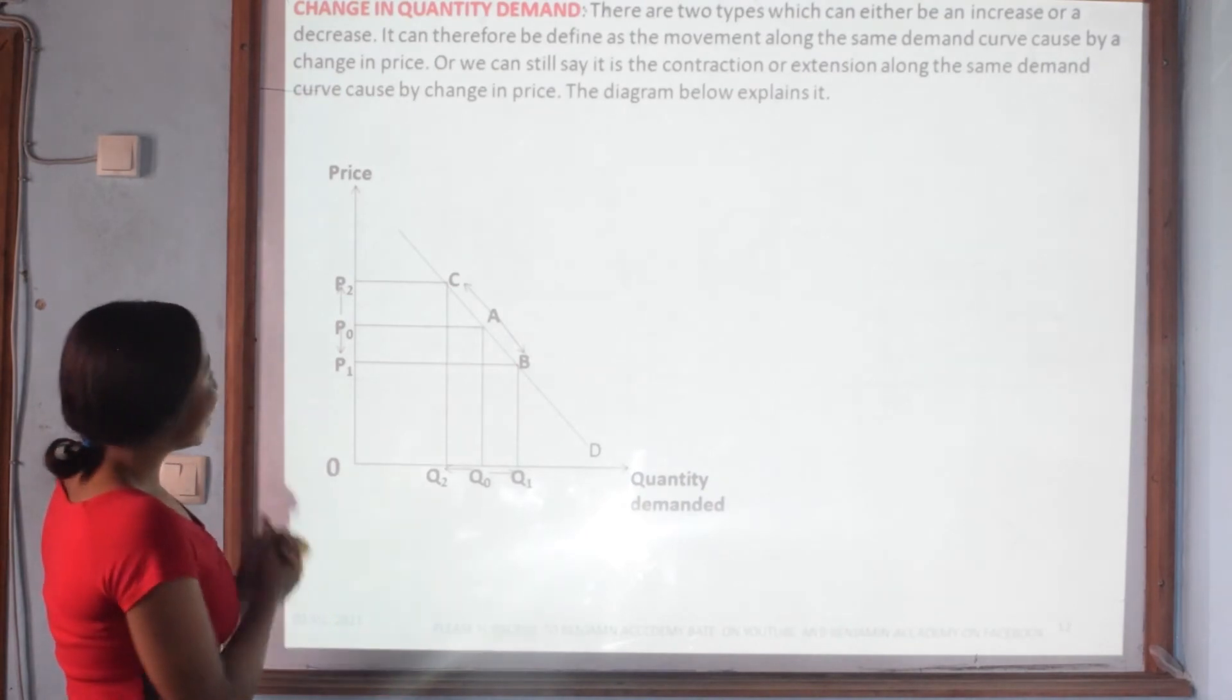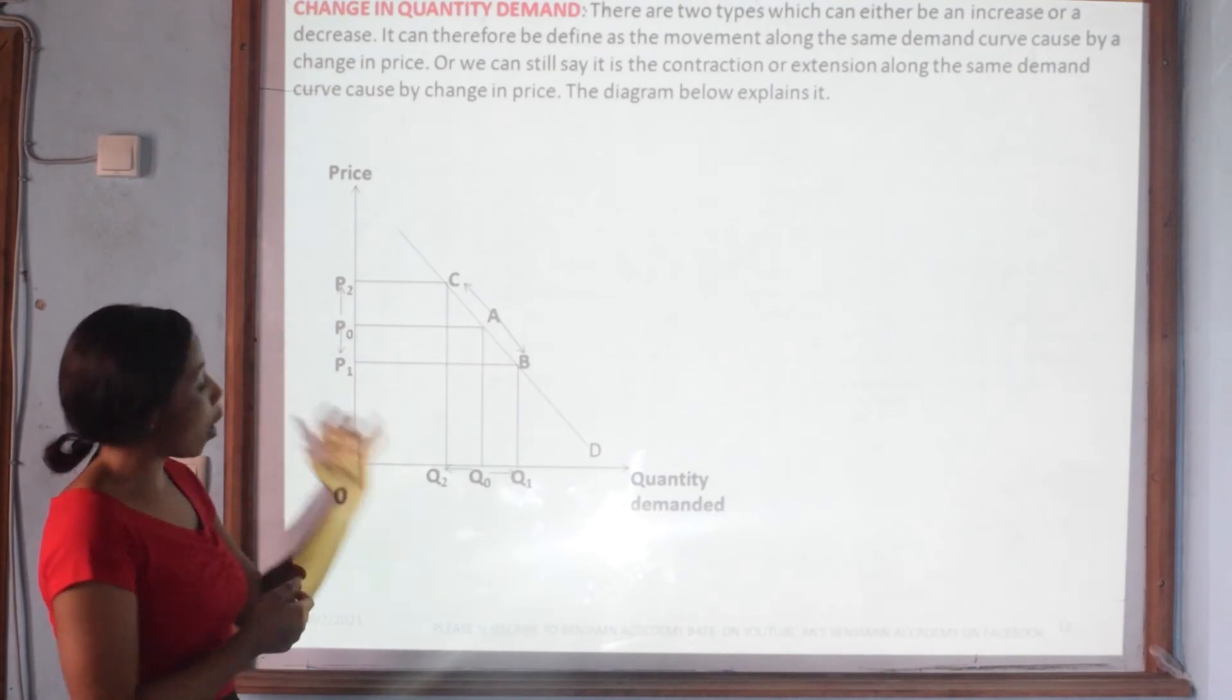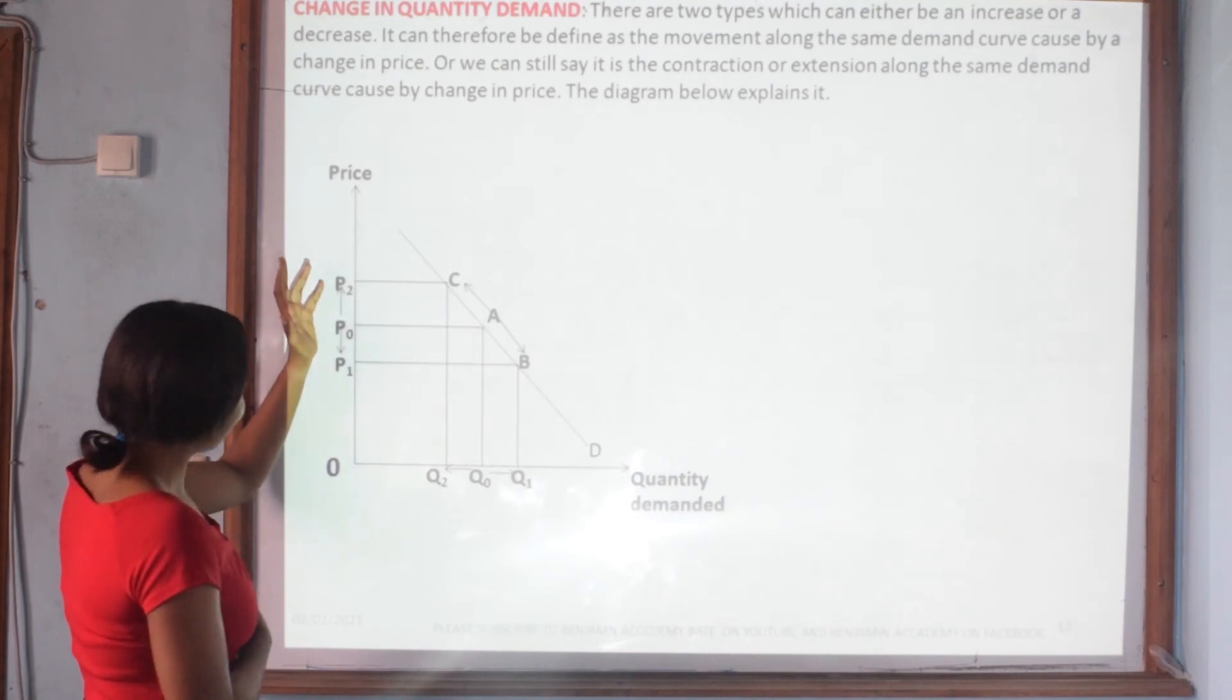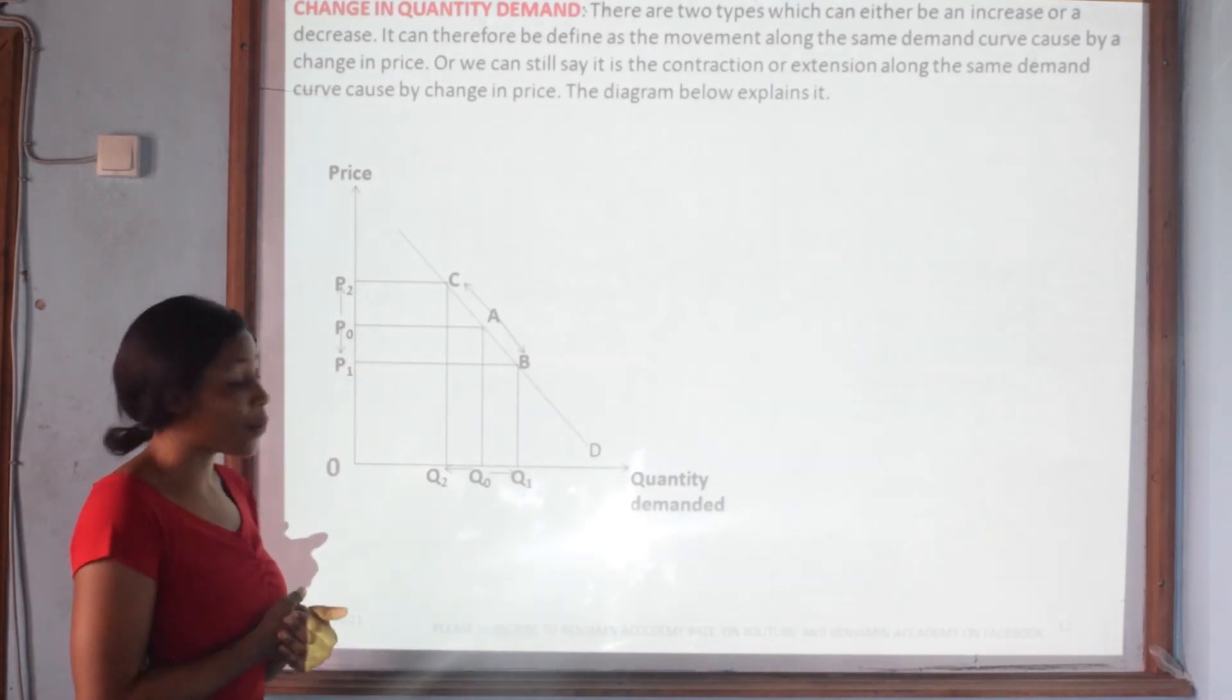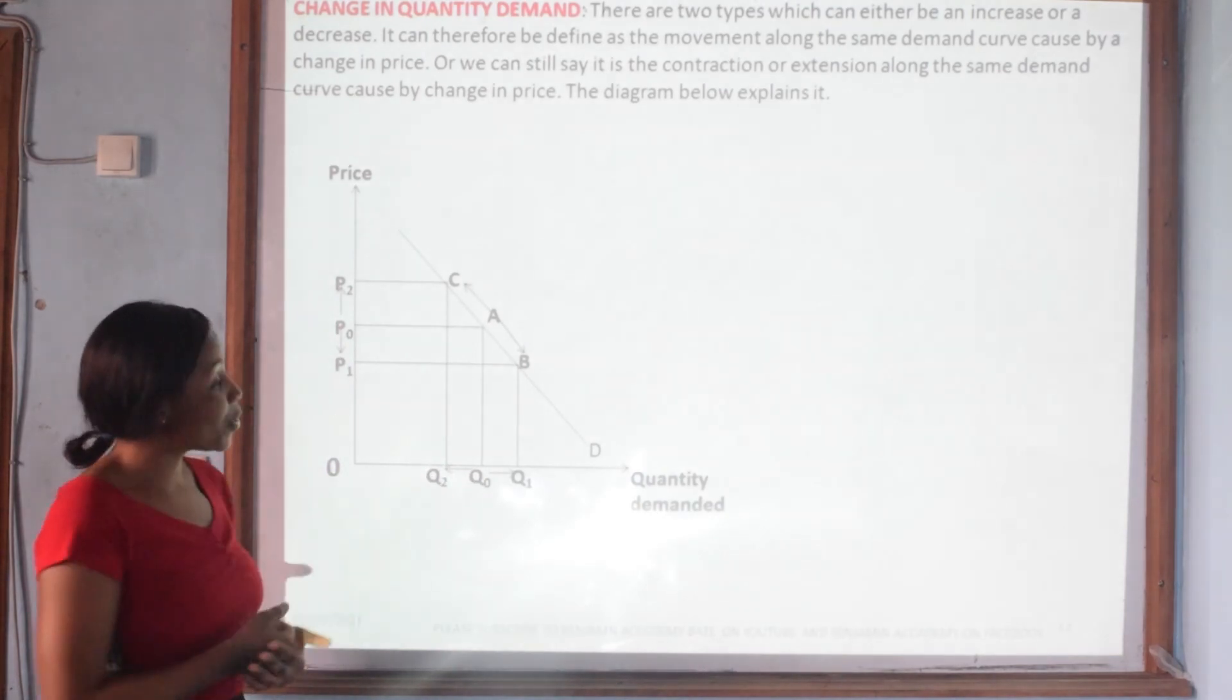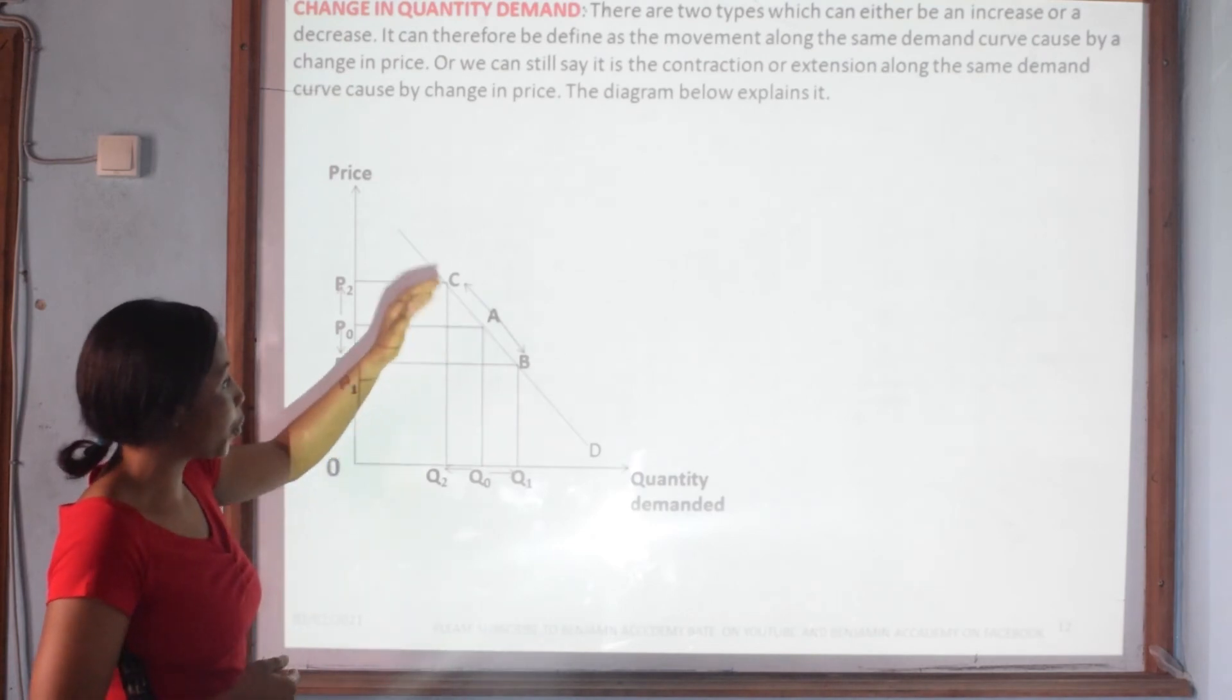Now in our diagram, the initial price and initial quantities are indicated by P0 and Q0. An increase in price from P0 to P1 will cause demand to fall from Q0 to Q1, and this will be indicated by a contraction in demand curve from point A to point B.